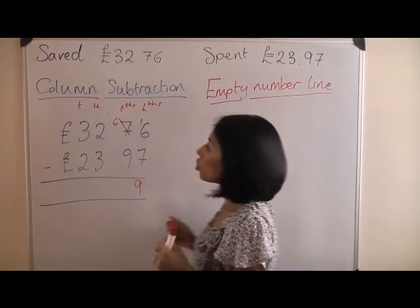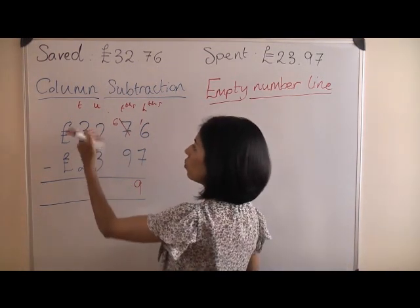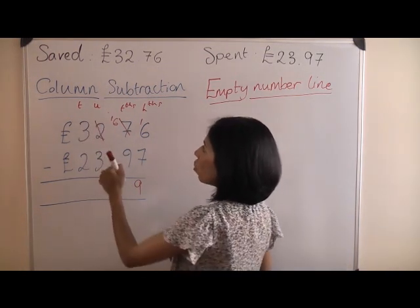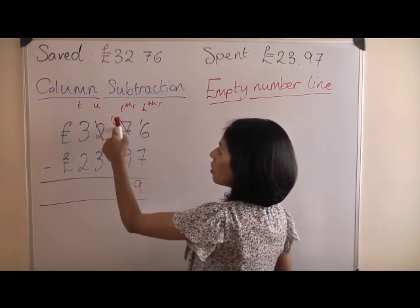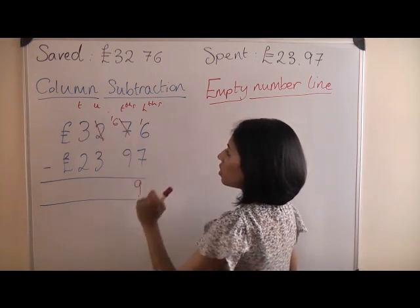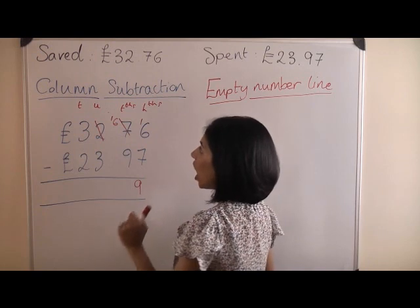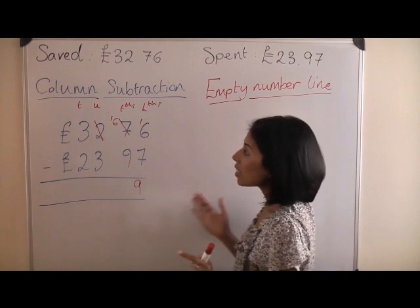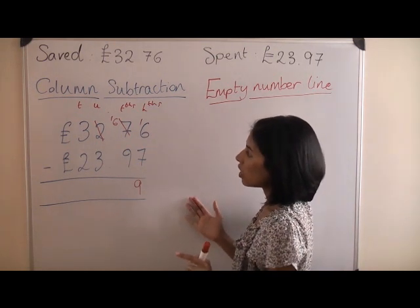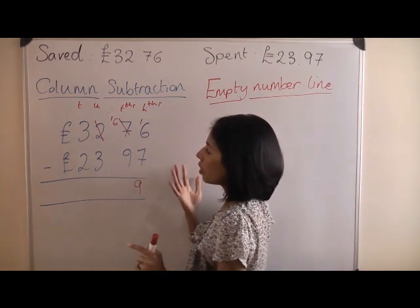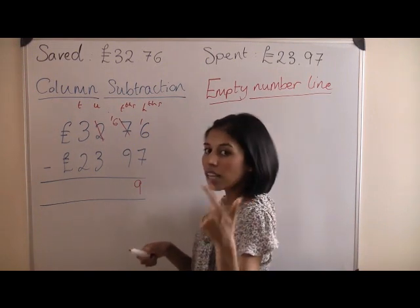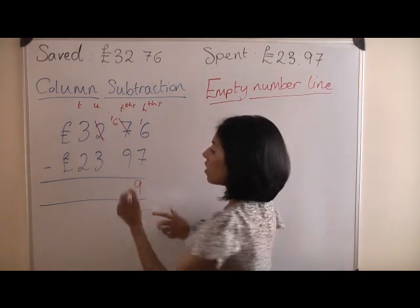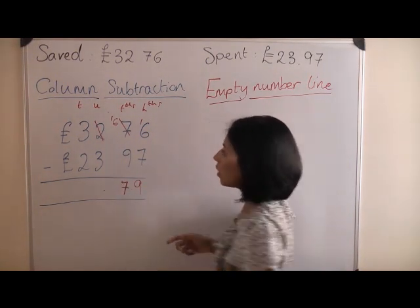Again, this is not possible, so you need to borrow from the units. So you're borrowing a unit. So now you have sixteen. A hundred and sixty. So you've borrowed a pound in theory. A hundred and sixty pence take away ninety. So if we count up from ninety, so a pound, ten, twenty, thirty, forty, fifty, sixty, that's seventy pence that you have left.